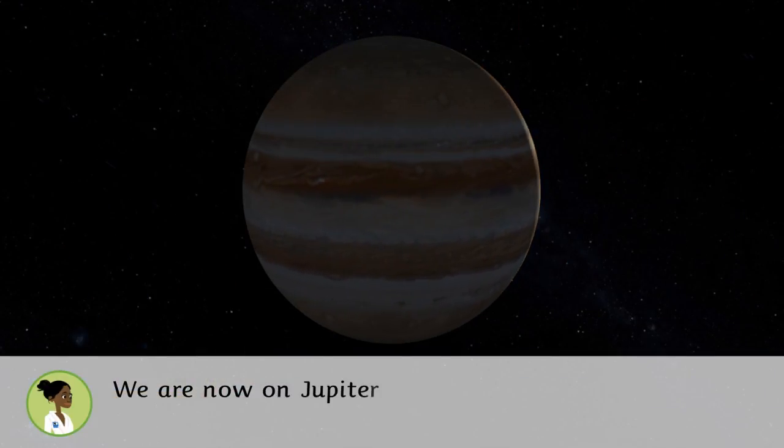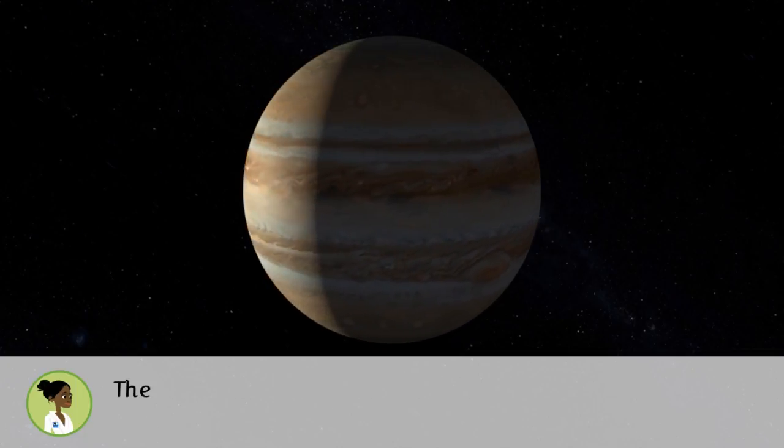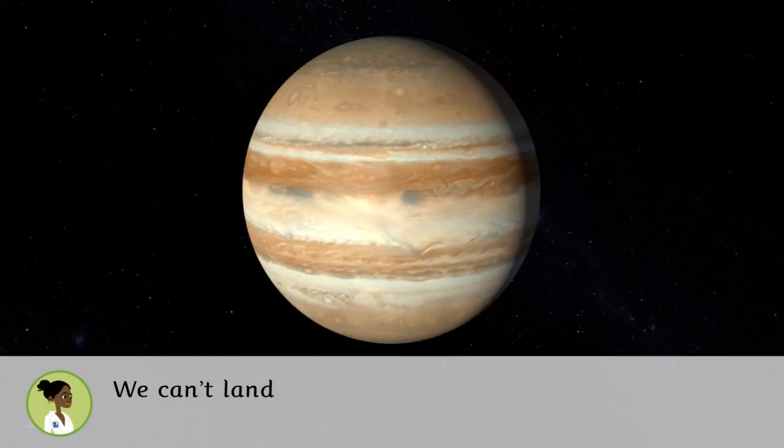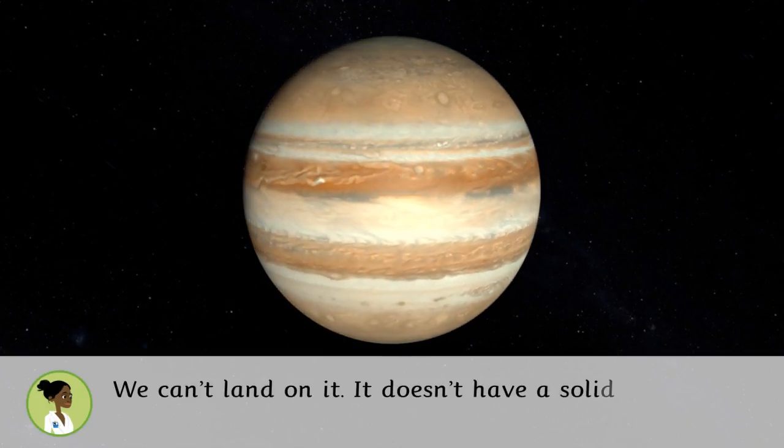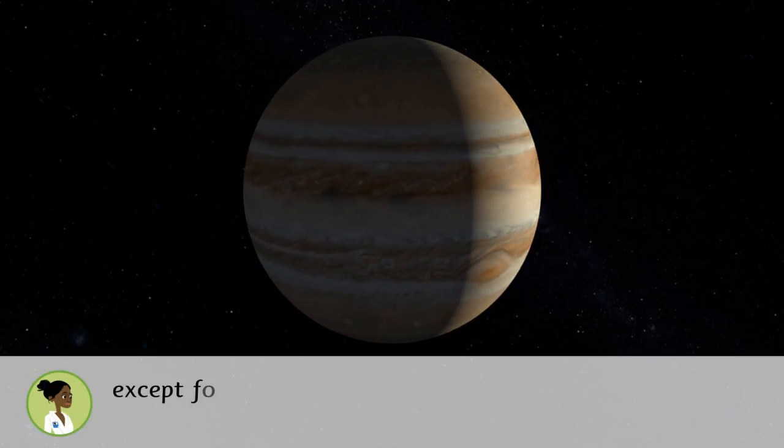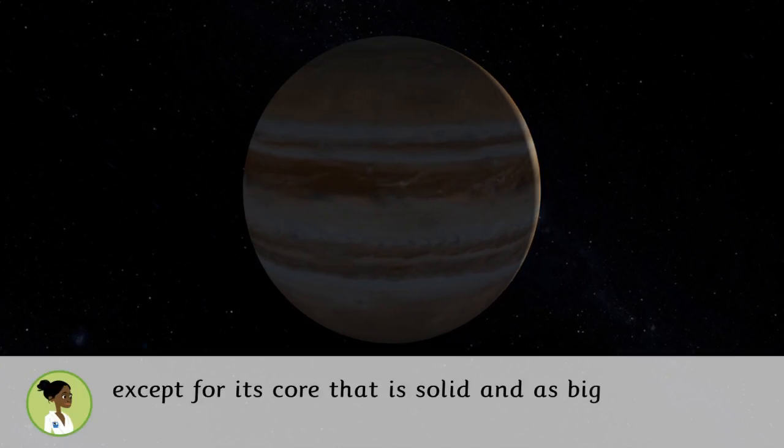We are now on Jupiter, the giant planet. The first gaseous planet of the solar system. We can't land on it. It doesn't have a solid surface because it is made of gas and liquids except for its core that is solid and is as big as the Earth.